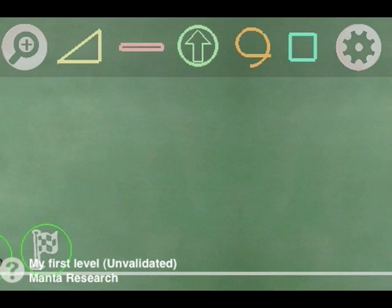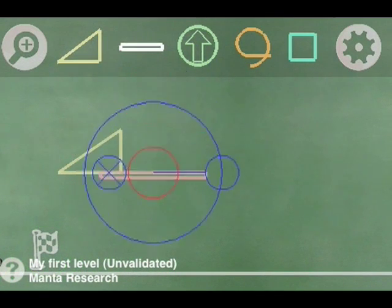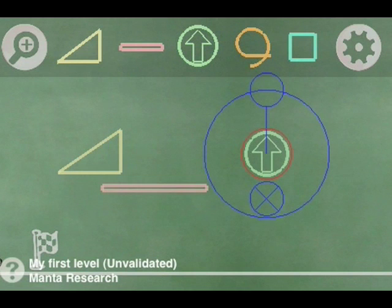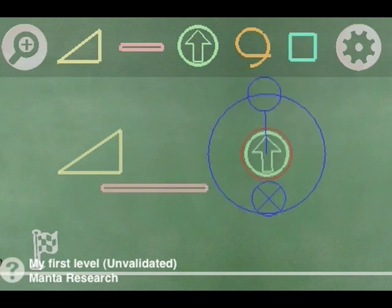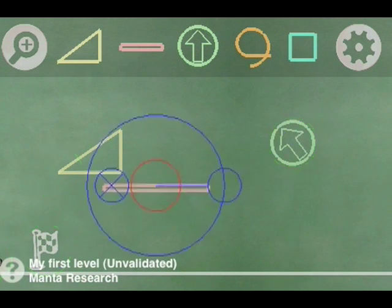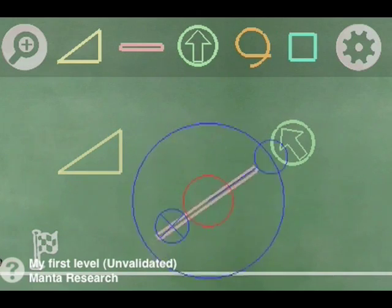There are five objects that can be used to build levels. Simply drag them from the dashboard to add them to the arena. An intuitive set of controls allows you to reposition, resize, and rotate the objects.